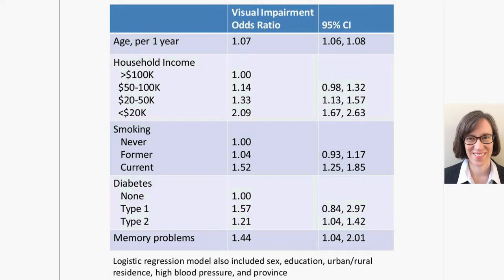We also looked at risk factors for visual impairment using multiple logistic regression. Older people were more likely to have visual impairment. People with lower incomes — for example, those making under $20,000 — had two times the odds of visual impairment compared to those making over $100,000. Current smokers were more likely to have visual impairment compared to never smokers. People with type 2 diabetes were more likely to have visual impairment, and the type 1 odds ratio was even higher. People who reported their doctor told them they have memory problems were also more likely to have visual impairment. Province remained very statistically significant even after adjusting for these other factors.